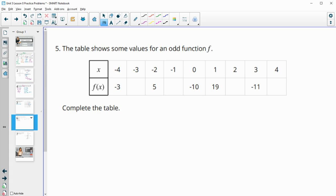Number five, the table shows some values for an odd function. Complete the table. Remember, for an odd function, opposite inputs give opposite outputs. So a lot of o's there. Opposite in, opposite out for odd. When we look at negative 4 and 4 they're going to have opposite outputs. So this one's negative 3, so this one's going to be 3.